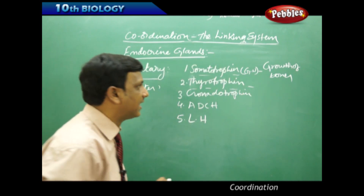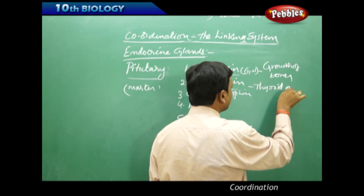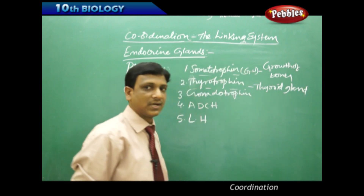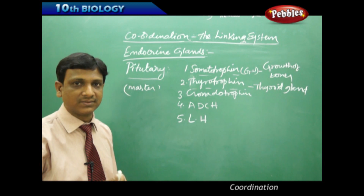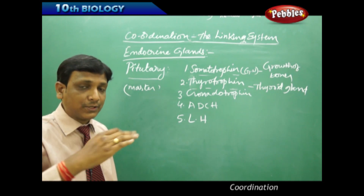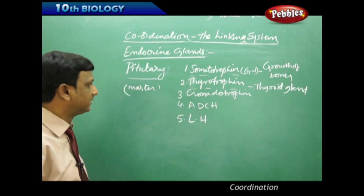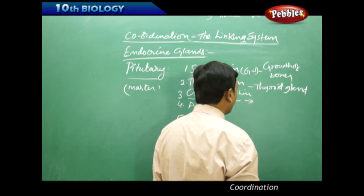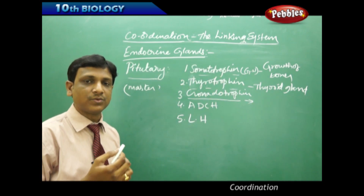The next one is thyrotrophin. Thyrotrophin activates the thyroid gland, causing it to secrete thyroxin. Thyroxin is a hormone that controls our body metabolism. The thyroid gland is activated by thyrotrophin, which is secreted by the pituitary.